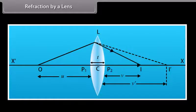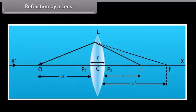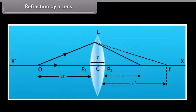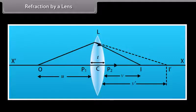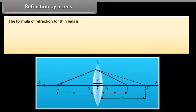O is a point object on the principal axis of the lens. The distance of O from pole P1 is U. The first refracting surface forms the image of O at I' at a distance V' from P1. The image I' acts as a virtual object for the second surface, and after refraction at the second surface, the final image is formed at I.